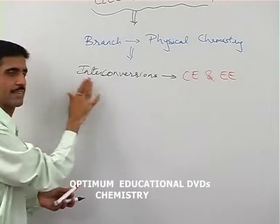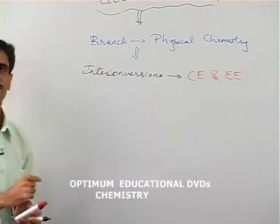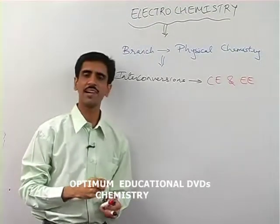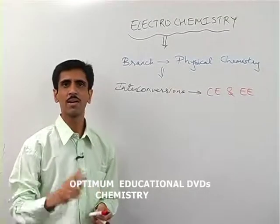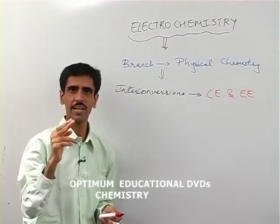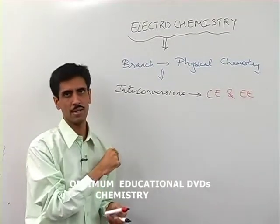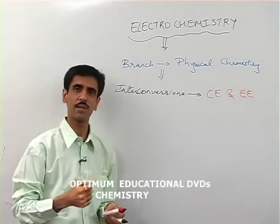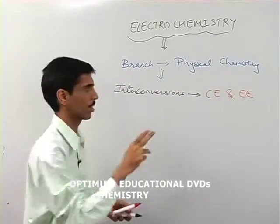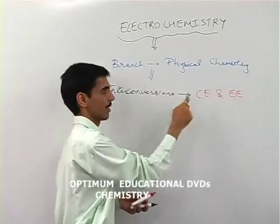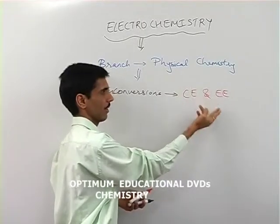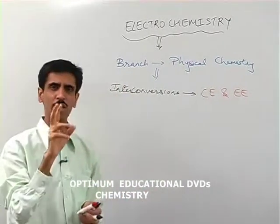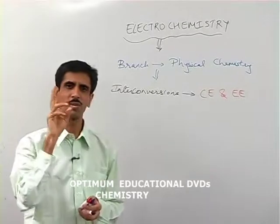The word 'interconversion' is important here. Energy can be converted from one form to another — it cannot be created nor destroyed. So here we are talking about conversions: chemical energy into electrical energy, or electrical energy into chemical energy. This is what this chapter is going to discuss.